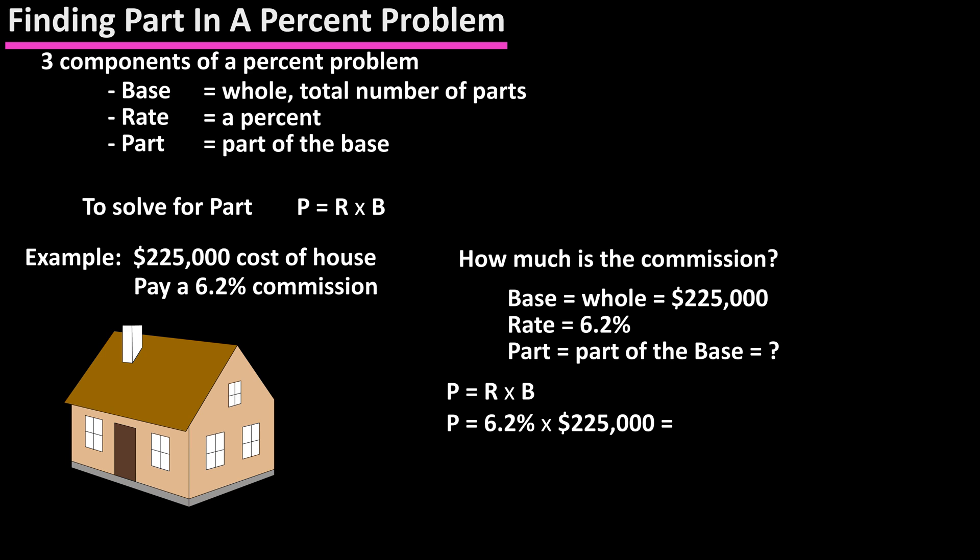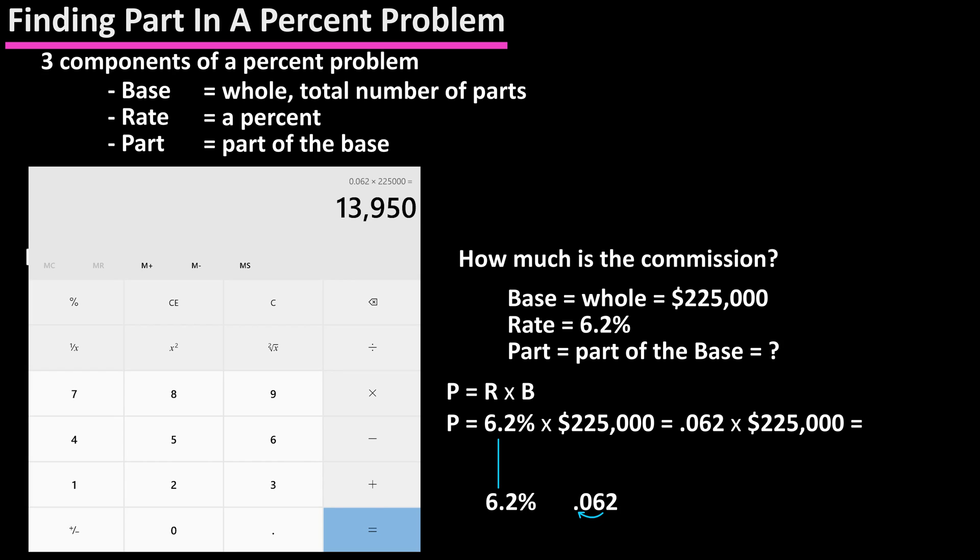We first need to convert the 6.2% to a decimal to do the math. To convert percent to a decimal, we drop the percent sign and move the decimal point two places to the left to get 0.062.